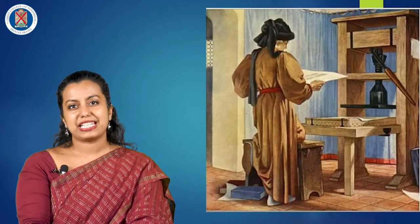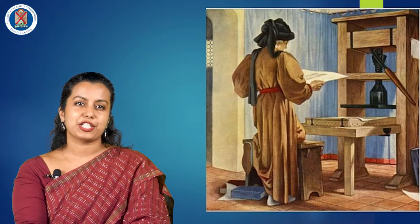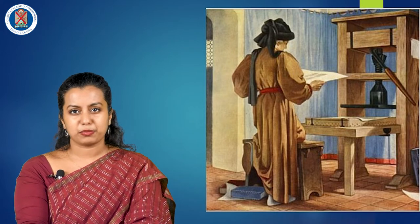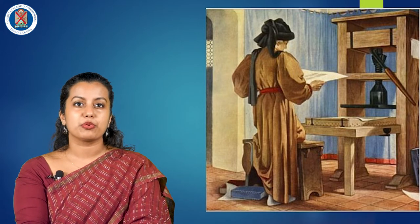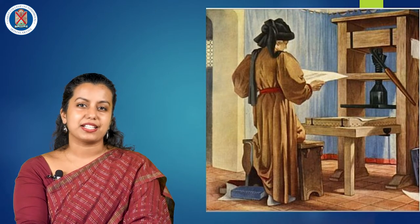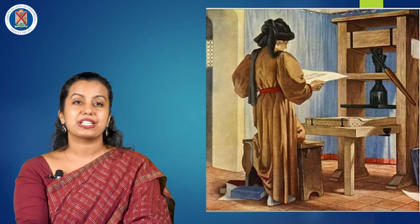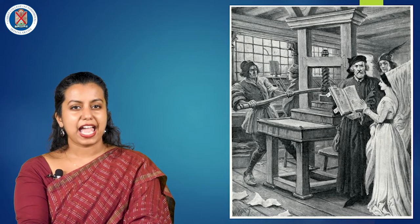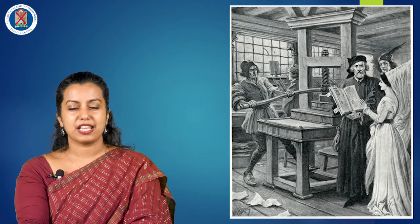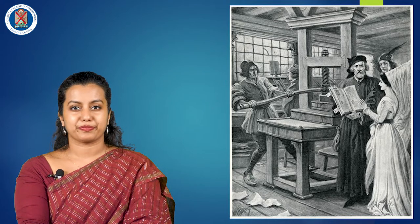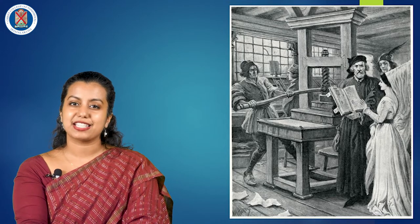A significant historical event that boosted the translation practice in Europe was the printing revolution in the 15th century. Books became easily available compared to the medieval era when books were only hand copied. The printing press had a fundamental role in standardizing languages across Europe. In 1473, the first English book was printed by an English merchant and translator William Caxton in Belgium. The book was the Recuyell of the Histories of Troy, translated from French by Caxton himself.